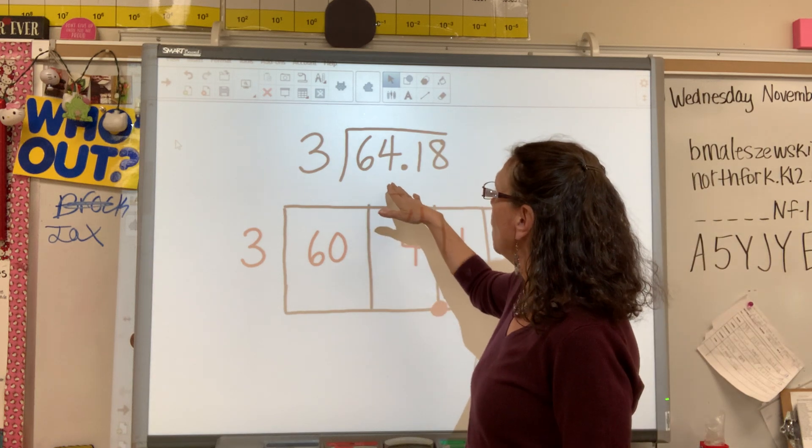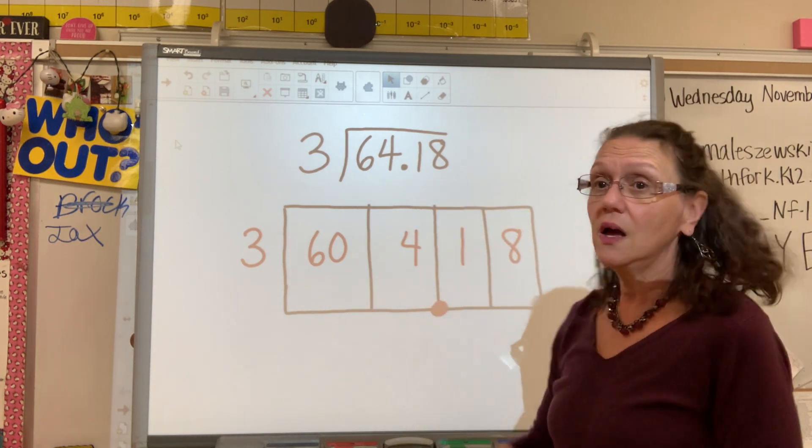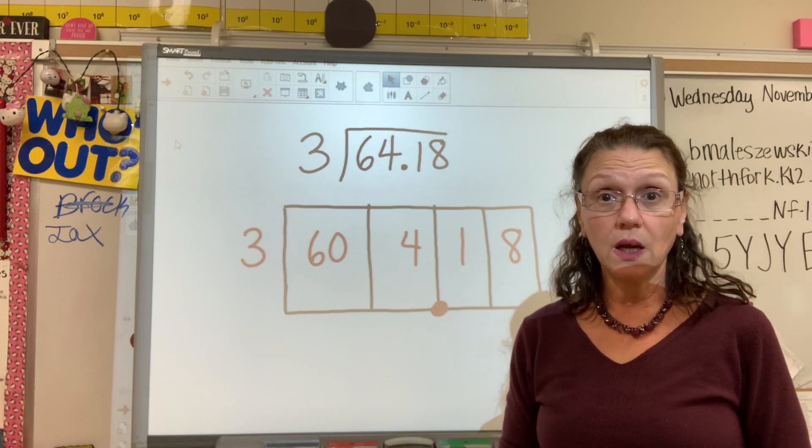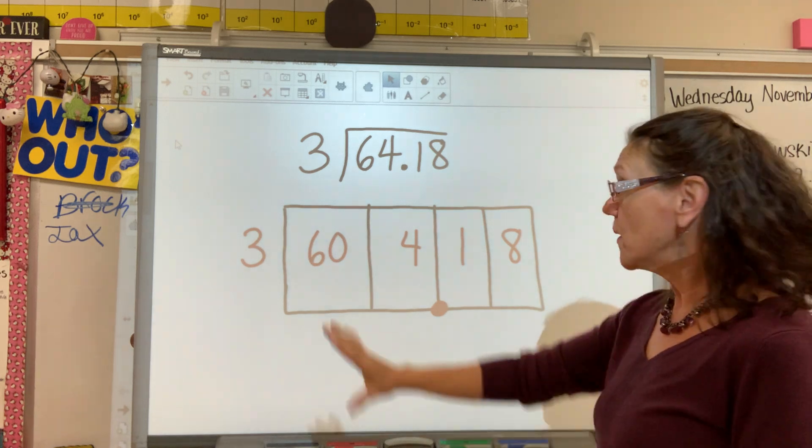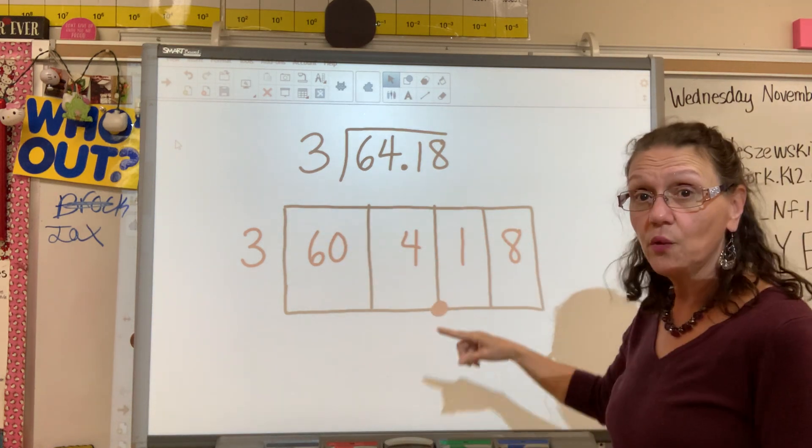We have 64 and 18 hundredths divided by three. So we set up our area model using our familiar box.